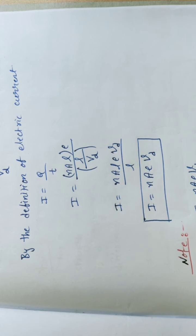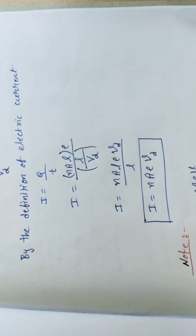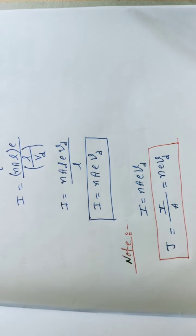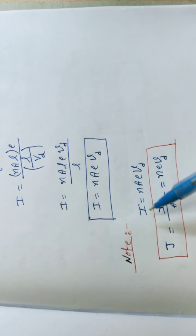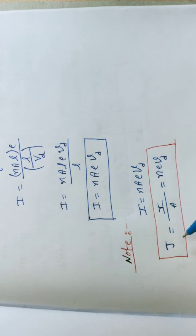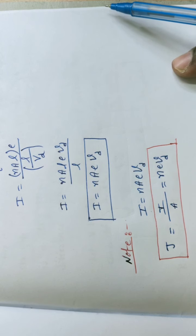We have derived the relation between electric current and drift velocity: I = nAeVd. From this, current density J = I/A, which gives J = neVd.